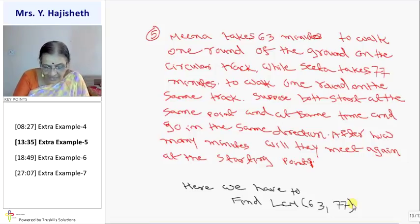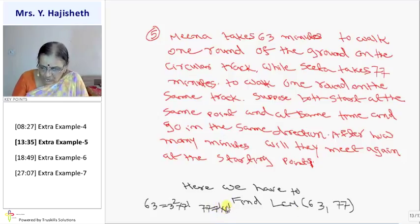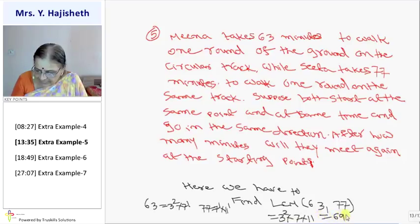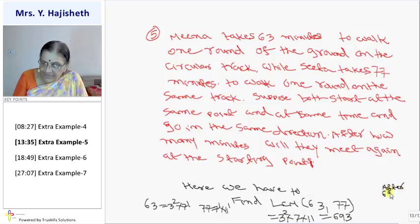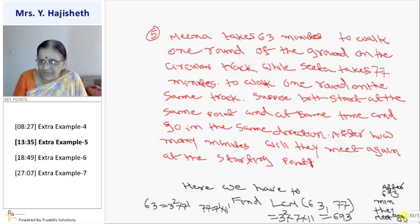Find LCM of this, and 63 ka, main prime factorization karungi, toh kya aayega? 3 square into 7 raised to 1. And 77 ka kya aayega? 7 raised to 1 into 11 raised to 1. So LCM mein kya aayega? 3 raised to 2 into 7 into 11. So it is coming 693. So after 693 minutes, after 693 minutes, they meet again. This is the answer.